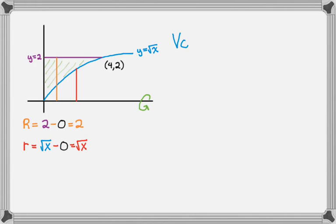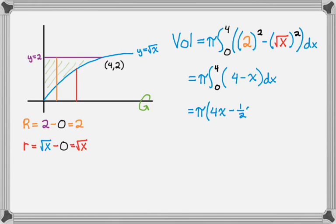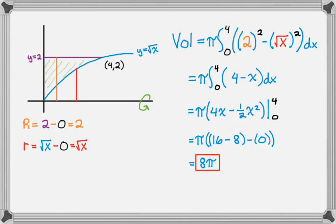Now I set up the volume integral: pi times the integral from 0 to 4 of the big radius squared minus the little radius squared, dx. When we simplify, the integrand becomes 4 minus x. Integrating and substituting in bounds 0 and 4 — with 0 being a nice bound — I ultimately get 8π as my volume.